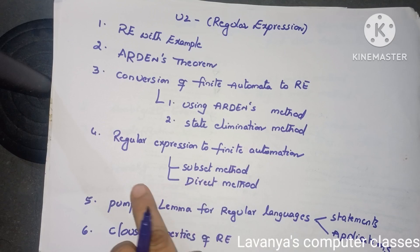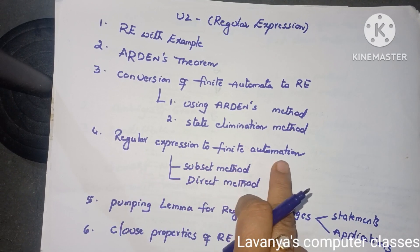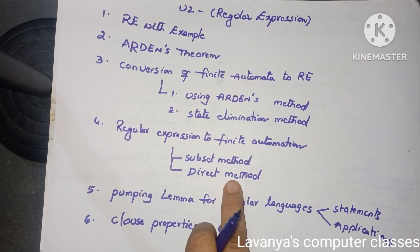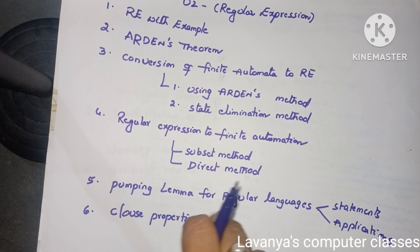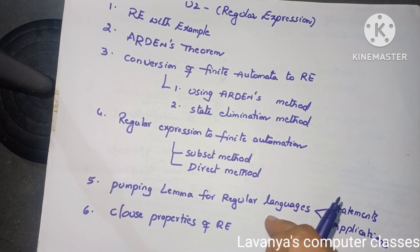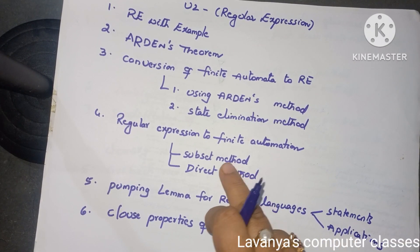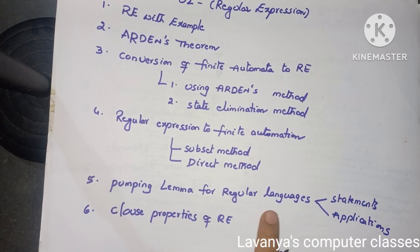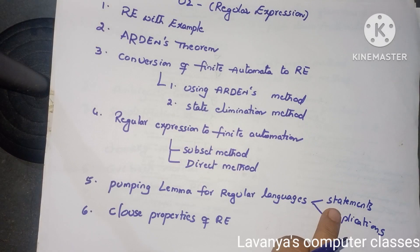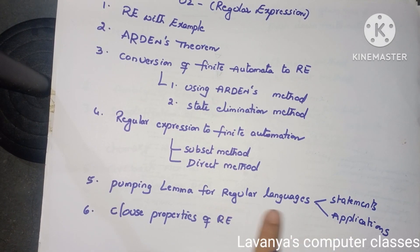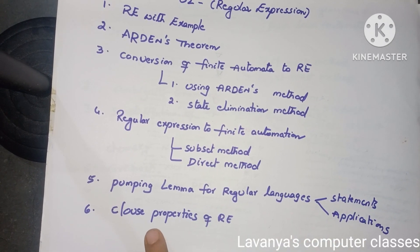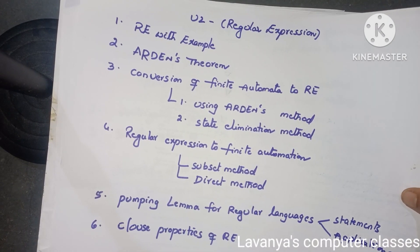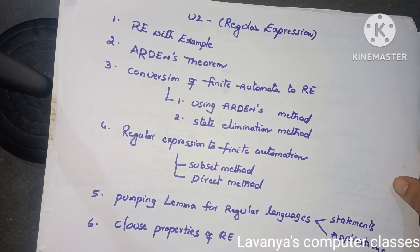Otherwise, you can go for any method. Next is regular expression to finite automata — there are two methods: the subset method and the direct method. Learn any one method; if not specified, go for any method. Next is pumping lemma for regular languages — its statement and applications. And the last one is closure properties of regular expressions. These are the important questions in unit 2.